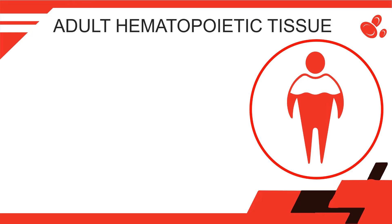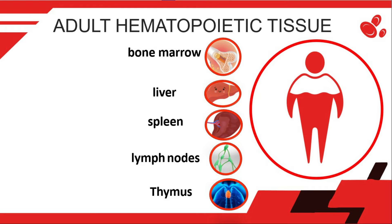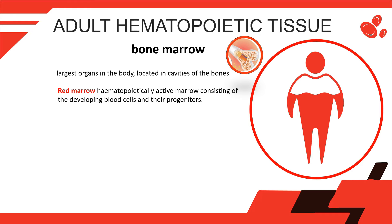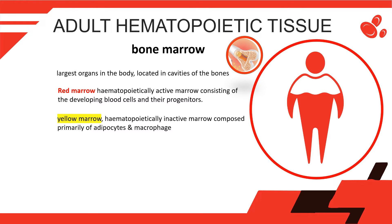Adult Hematopoietic Tissue: In adults, hematopoietic tissue is located in the bone marrow, lymph nodes, spleen, liver, and thymus. Bone marrow is one of the largest organs in the body, located within the cavities of the bones. Normal bone marrow contains two major components: red marrow, the hematopoietically active marrow consisting of developing blood cells and their progenitors; and yellow marrow, the hematopoietically inactive marrow composed primarily of adipocytes (fat cells) with undifferentiated mesenchymal cells and macrophages.